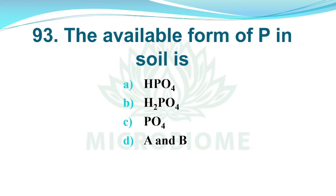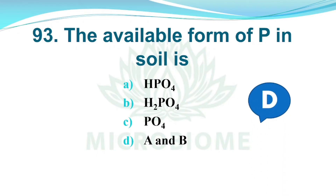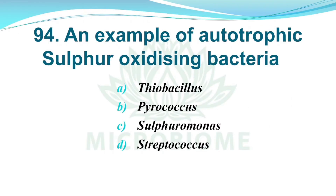And next, the available form of phosphorus in soil. Options: A) HPO4, B) H2PO4, C) PO4, D) Both A and B. The right answer is Option D, Both A and B — HPO4 and H2PO4.